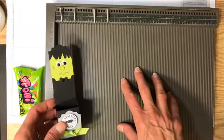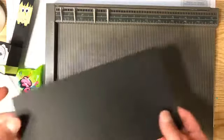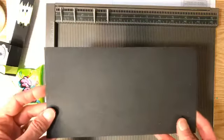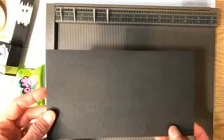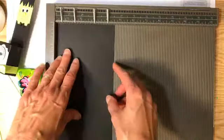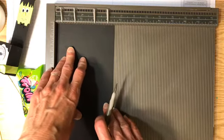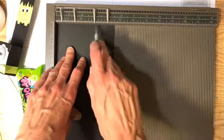I've got my simply scored scoring tool here and I've got a piece of cardstock. This is basic black and I cut it at four and a half by eight and a half. So I'm going to put the four and a half edge across the top of my scoring tool and I'm going to score it at a half inch, one and a half inches, three inches, and four inches.